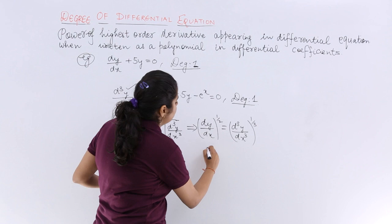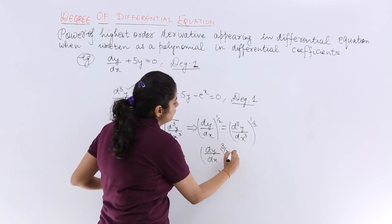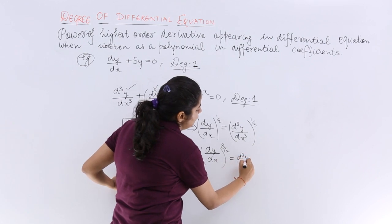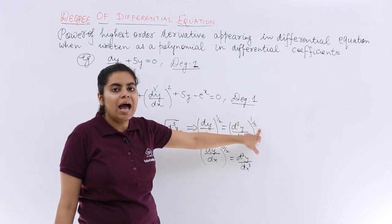If I cube both sides, it becomes (dy/dx)^(3/2) and that is d³y/dx³. So after you have cubed, this has removed. Now 3/2 is there.